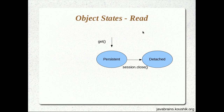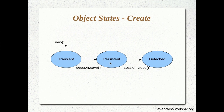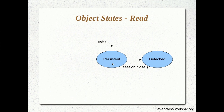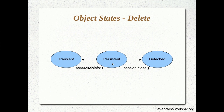In our example tutorial, we did a session.get and then an update, but it doesn't have to be done that way. You can also have a new object persisted so it gets saved, then make changes to it — it also automatically gets updated because it goes into a persistent state. So now we have seen create, read, and update. Now let's have a look at delete.